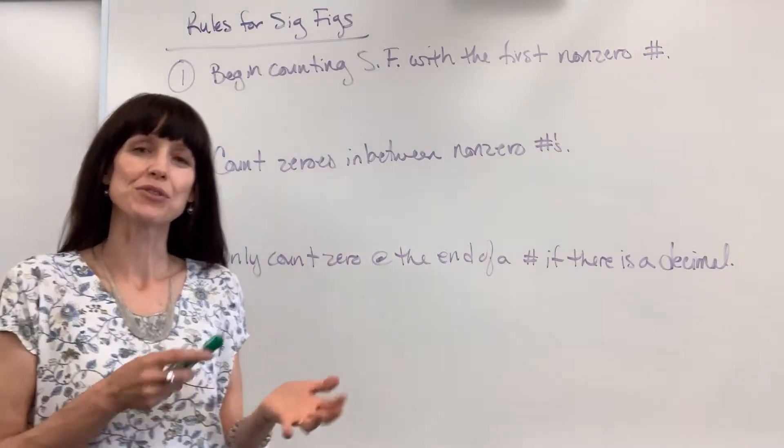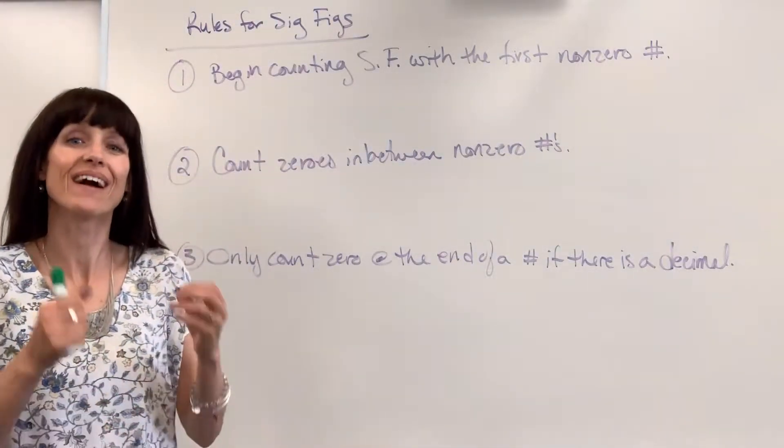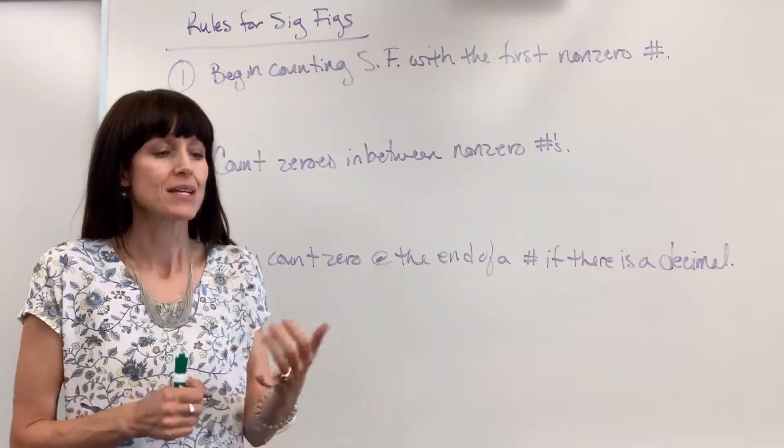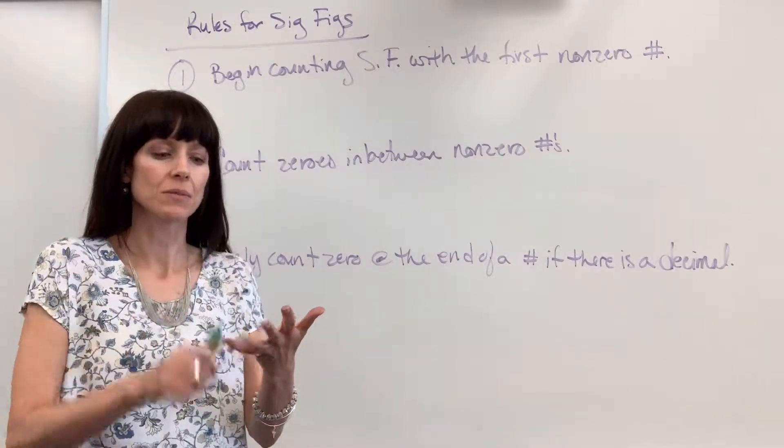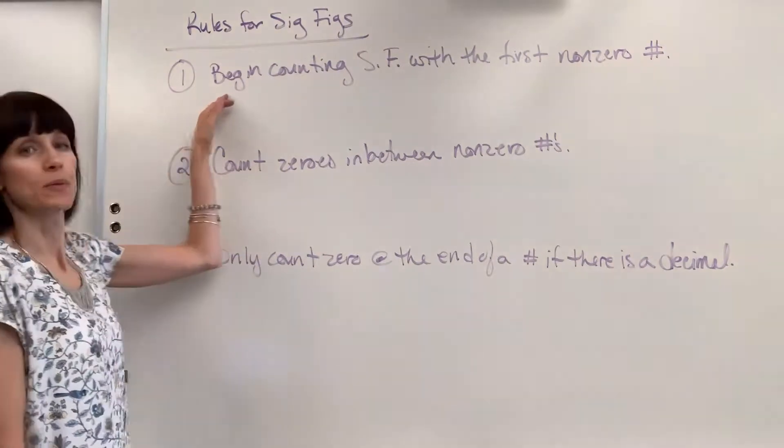Now I'm ready to give you the three rules for significant figures, and they all deal with zero. Zero is before a number, in the middle of a number, after a number. Let's look at number one.